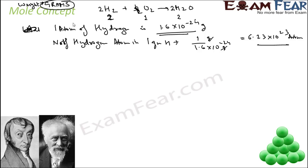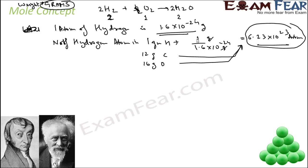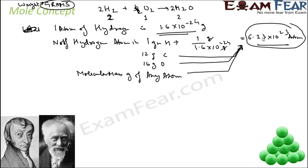Now, it is seen that even 12 grams of carbon also has these many atoms. 16 grams of oxygen also has these many atoms. And you remember, these are the molecular masses of hydrogen, carbon, and oxygen. This becomes a very unique number. Because the molecular mass of any atom has these many atoms. You take 12 grams of carbon, 14 grams of nitrogen, 16 grams of oxygen — all these will have these many atoms. This is what is seen experimentally, and this is called the Avogadro constant.